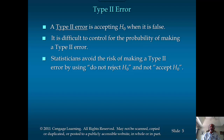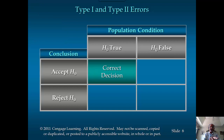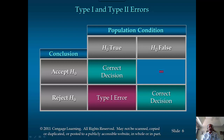Here are the four possibilities. The population condition H0 can be true or false — we don't know that — and based on the sample we conclude either 'do not reject H0' or 'reject H0.' When those decisions match reality, we have made the correct decision, and we hope the sampling and testing procedure lands us there most often. But there are occasions when H0 is true and we end up rejecting it — that is type 1 error — or H0 is false but we do not reject it — that is type 2 error.